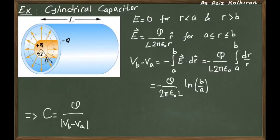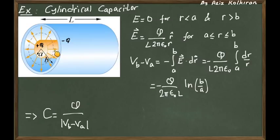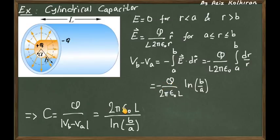Once we know this potential difference, calculating the capacitance is straightforward. The capacitance is the total charge of one conductor divided by the potential difference. The total charge of both conductors is zero, but the definition of capacitance uses the charge on one conductor. This expression reduces to 2πε₀L divided by the natural logarithm of B over A. This is the capacitance of a cylindrical capacitor.